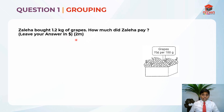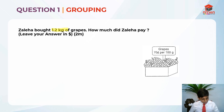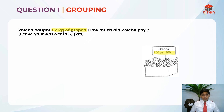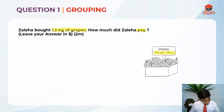Now that we have read the question, let's underline the keywords. Zaliha bought 1.2 kilograms of grapes, and another important piece of information: 70 cents for 100 grams of grapes. We must also take note that 'how much did Zaliha pay' refers to this 1.2 kilograms of grapes.